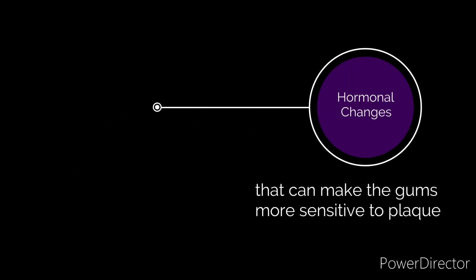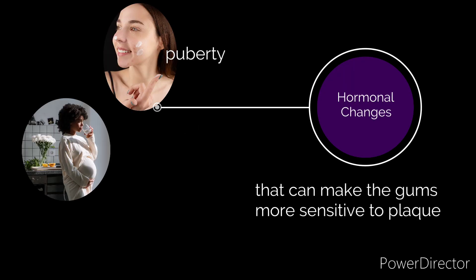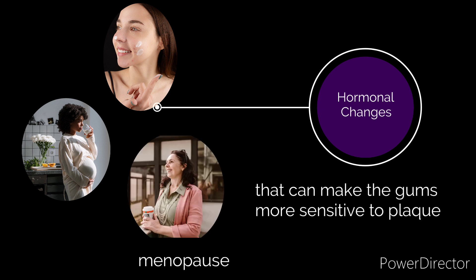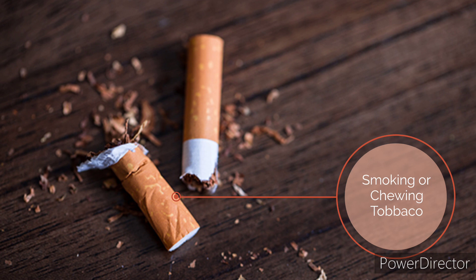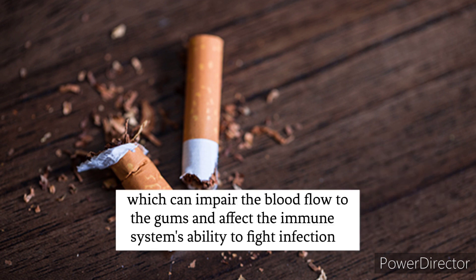Hormonal changes, such as during puberty, pregnancy, or menopause, can make the gums more sensitive to plaque. Smoking or chewing tobacco can impair blood flow to the gums and affect the immune system's ability to fight infection.